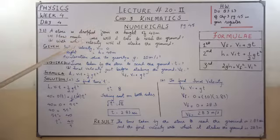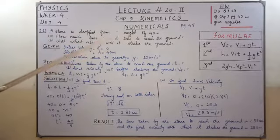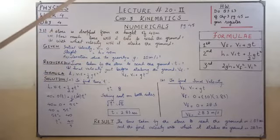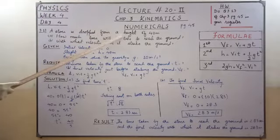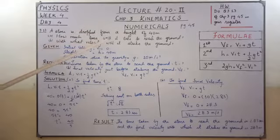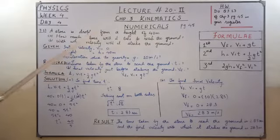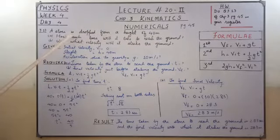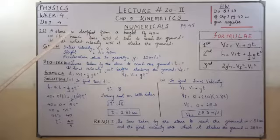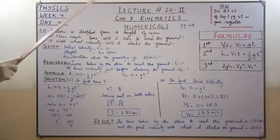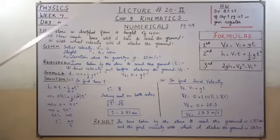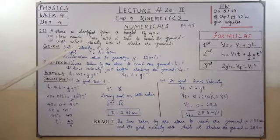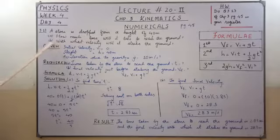Today we are going to the last numerical of chapter number 3 and that is 3.13. The question is: a stone is dropped from a height of 40 meters. The height is already given here. How much time will it take to reach the ground?